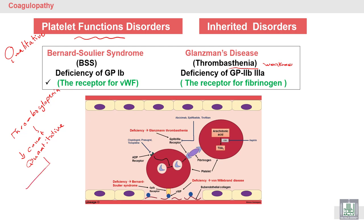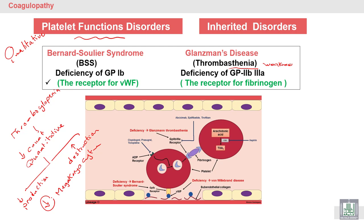In thrombocytopenia we divided causes into decreased production or increased destruction, and we can differentiate between both very easily by looking at megakaryocytes. If megakaryocytes are decreased it means decreased production; if megakaryocytes are increased it means increased destruction. Now we return to platelet function disorders.